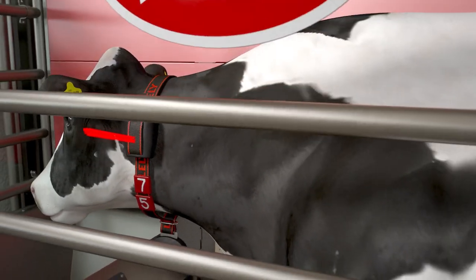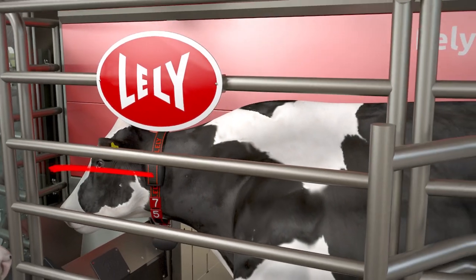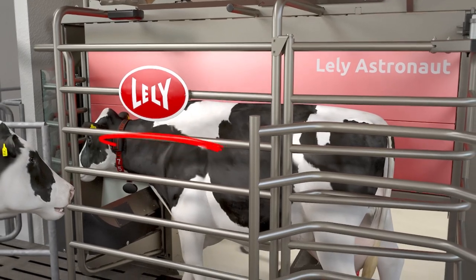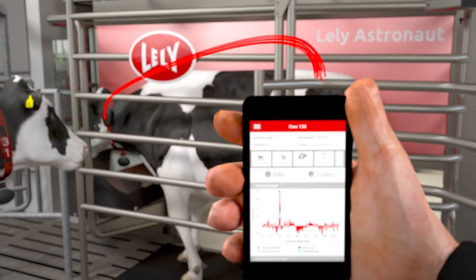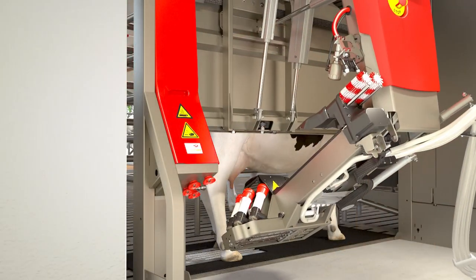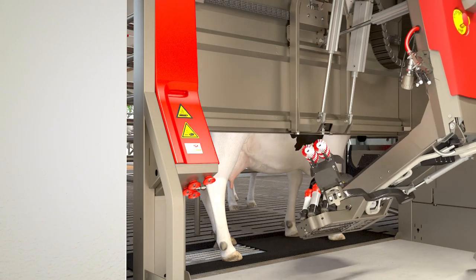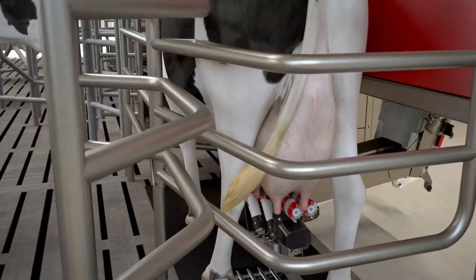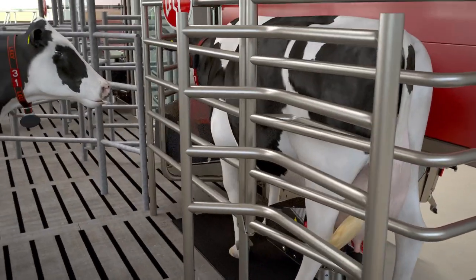As soon as the cow enters the robot, she is recognized from the sensor on her collar. Information on the cow is passed to the Lely T4C management system. Milking is prepared on the basis of the cow's historical data. As a result, the robot knows the exact position of the teats and the ration to be fed.